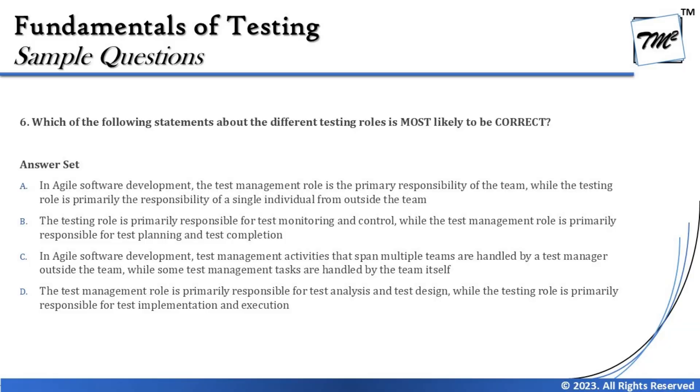Option A says: in agile software development, the test management role is the primary responsibility of the team, while the testing role is primarily the responsibility of a single individual from outside the team. When we talk about the whole team approach, it says everyone is embedded into the team — designer, developer, and tester. So testing is not done by someone outside the team, which makes this option completely wrong.